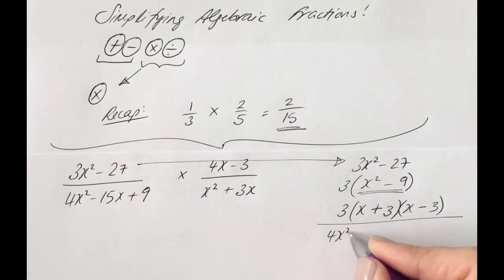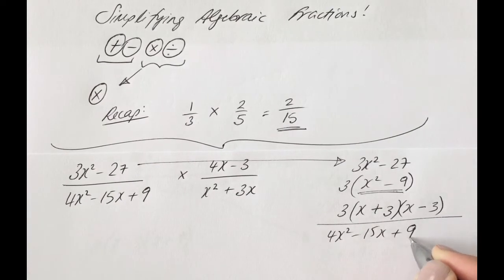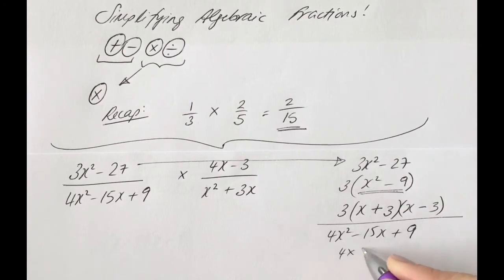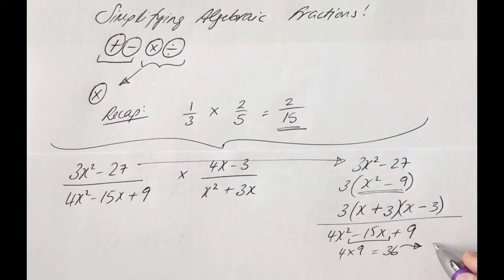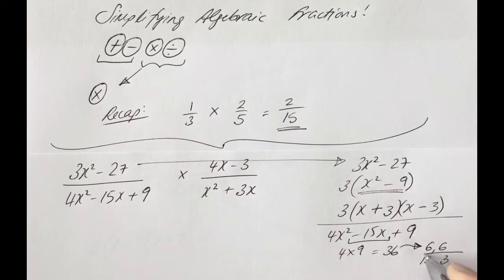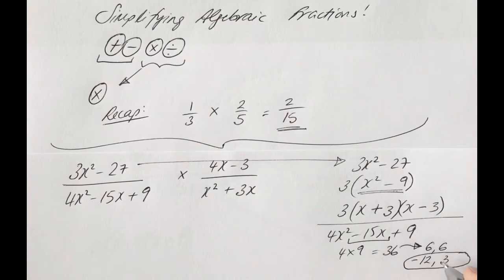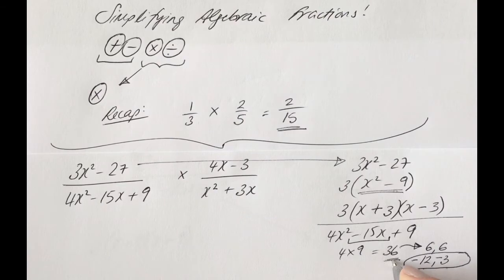Now let's look at the denominator on the left-hand side: 4x squared minus 15x plus 9, which is a quadratic trinomial. We use the four-step method — first number by last number is 4 times 9, which is 36. Now we look for factors of 36 that add or subtract to make minus 15. Factors such as 6 times 6 won't work. Trying 12 and 3: with signs minus 12 and minus 3, they multiply to give plus 36 and add to give minus 15. That works.